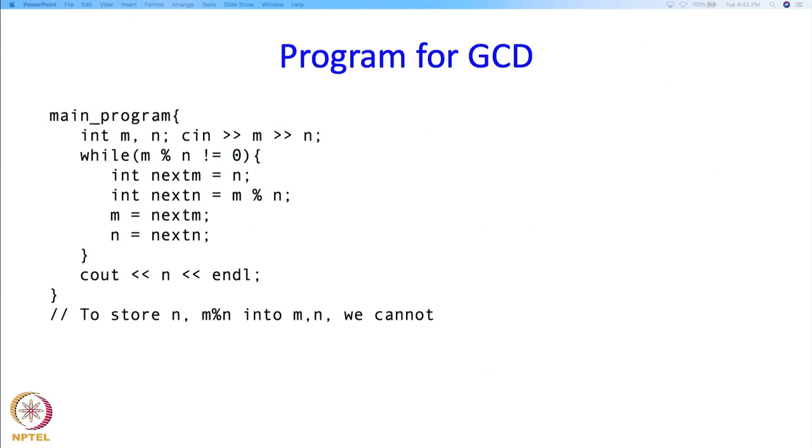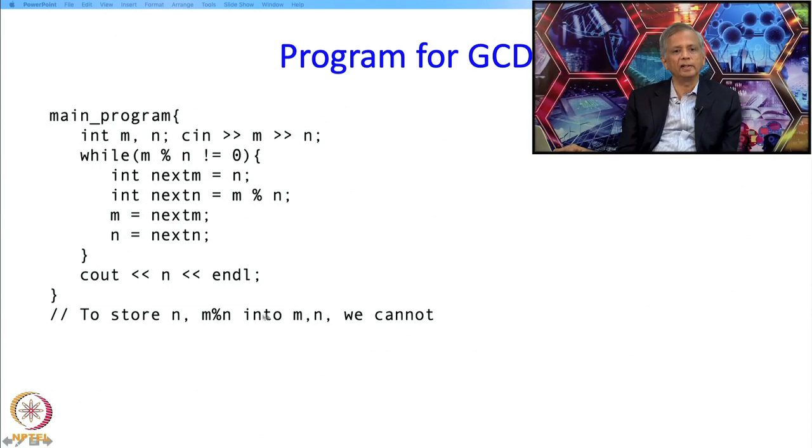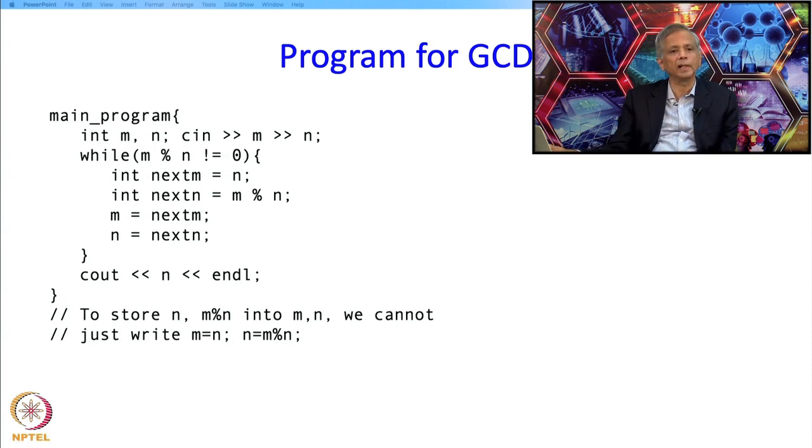So now there are some subtle points over here which I should note. So if I want to store n and m mod n into m and n, I cannot just write m equal to n, n equal to m mod n. Why? Because if I write m equal to n, then when I try to do this m mod n, this m would already have the value n. So then I would be doing n mod n, so that would just give me 1. So that is not good. So that is why we need to do something elaborate like this. Just to be careful, we are saying what is the next value of m and of n and we are doing that.